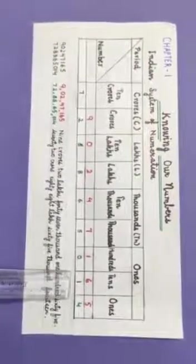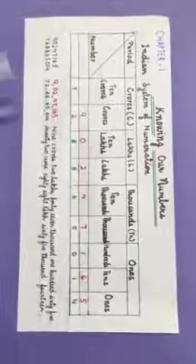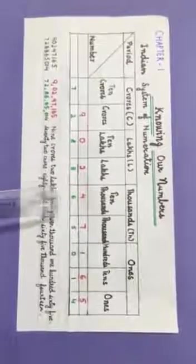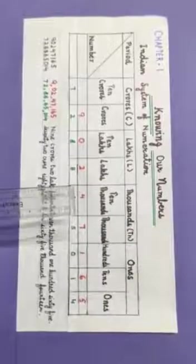the first 3 digits from the right of a number form the ones period, the next 2 digits form the thousands period, the next 2 digits form the lakhs period, and the next 2 digits form the crores period. We use commas to separate the periods which help us to recognize the number name easily.